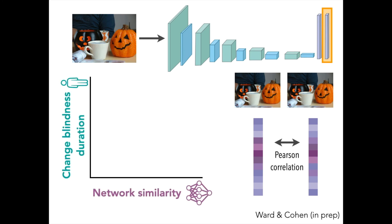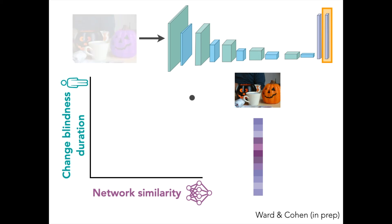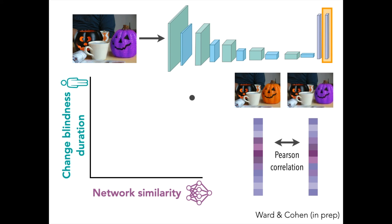Then, we can use this network similarity to predict how long people will take to notice the change from these two images. Here, these two pictures yield really similar representations, and so we predicted that this would yield long change blindness durations, so a point up here. Other changes, like changing the pumpkin to purple, are pretty obvious. This would yield a representation value that is less similar in the network and would correspondingly be easier for people to see. So again, we are predicting from network representations the behavior in humans.